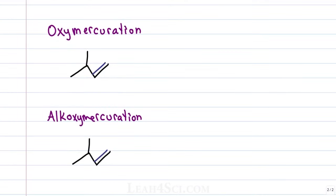Let's look at oxymercuration and alkoxymercuration at the same time. Both of them have the oxy for oxygen, merc for mercury and the only difference is we have an alkyl group in the second reaction.